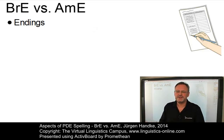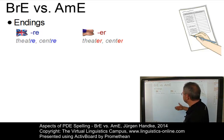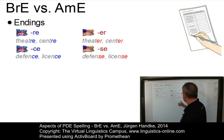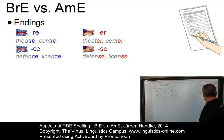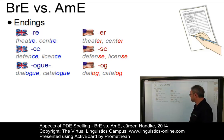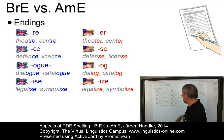Here are some examples of endings written differently in the two main varieties. First, RE versus ER: 'theatre' and 'centre' in British English are spelt with RE, while American English uses ER. Then we have CE versus SE in words such as 'defence' and 'licence' in British English, which are spelt with SE in American English. There is also OGUE versus OG: 'dialogue' and 'catalogue' have a much more simplified ending in American English, where OGUE becomes OG. And 'legalise'/'symbolise' use ISE in British English versus IZE in American English.